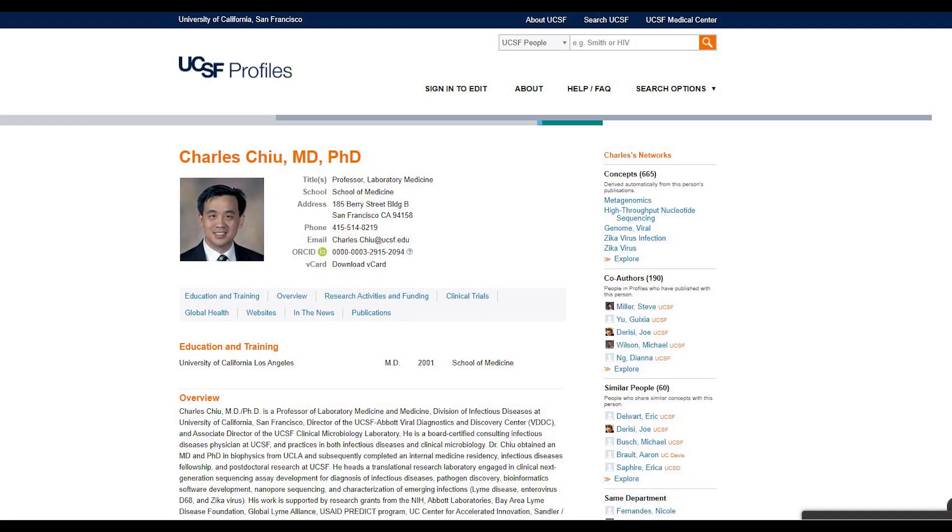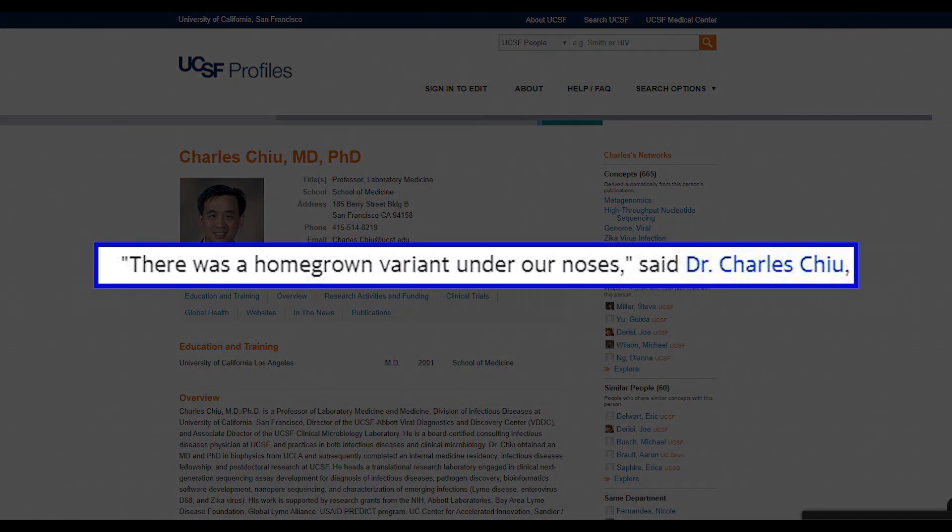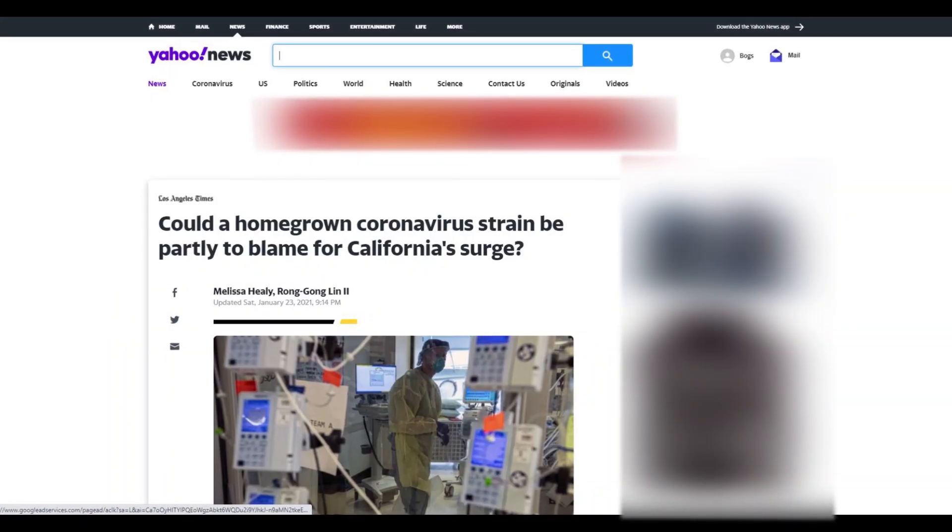Dr. Charles Chu, a laboratory medicine specialist at UC San Francisco, said there was a homegrown variant under our noses.